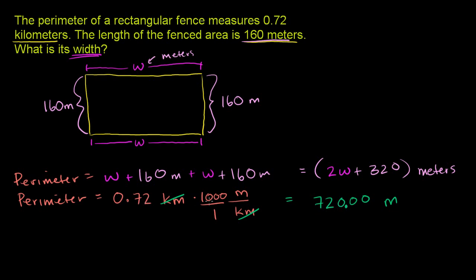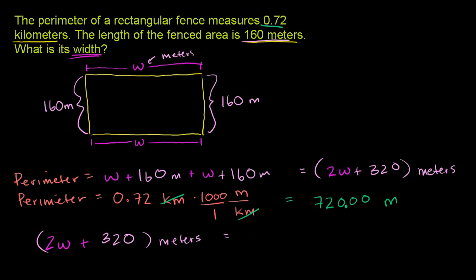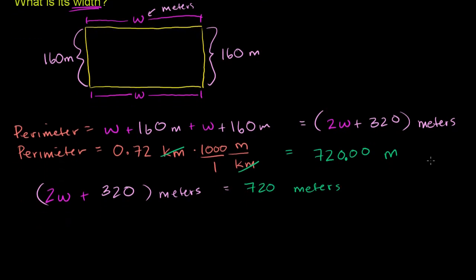And that makes sense. 0.72 is not quite 1, but it's getting close — almost three-fourths of a whole. And 720 is almost three-fourths of 1,000, so it makes sense. So the perimeter, 0.72 kilometers, is the same thing as 720 meters. So if you take two times the width in meters and add that to the combined lengths — 160 and 160, that's 320 — all of this in meters is going to be equal to the total perimeter, which is 720 meters. So 2w plus 320 is equal to 720.